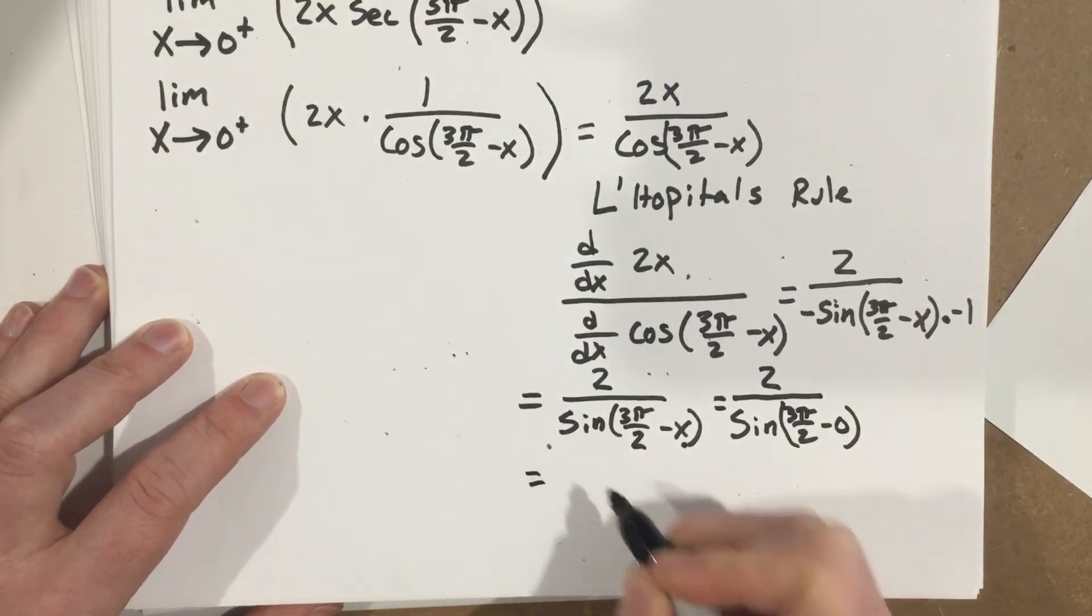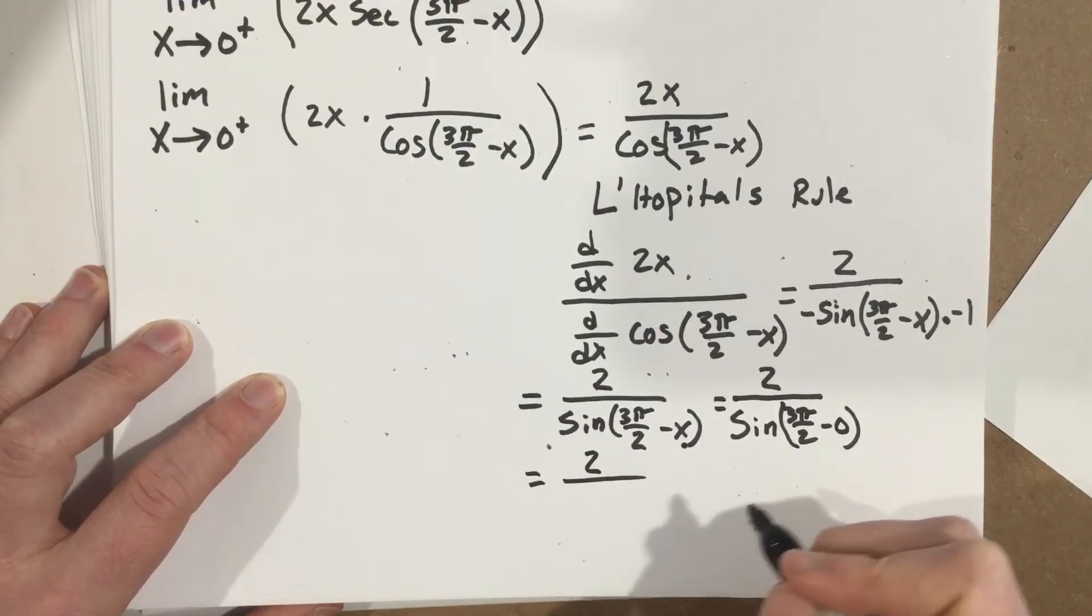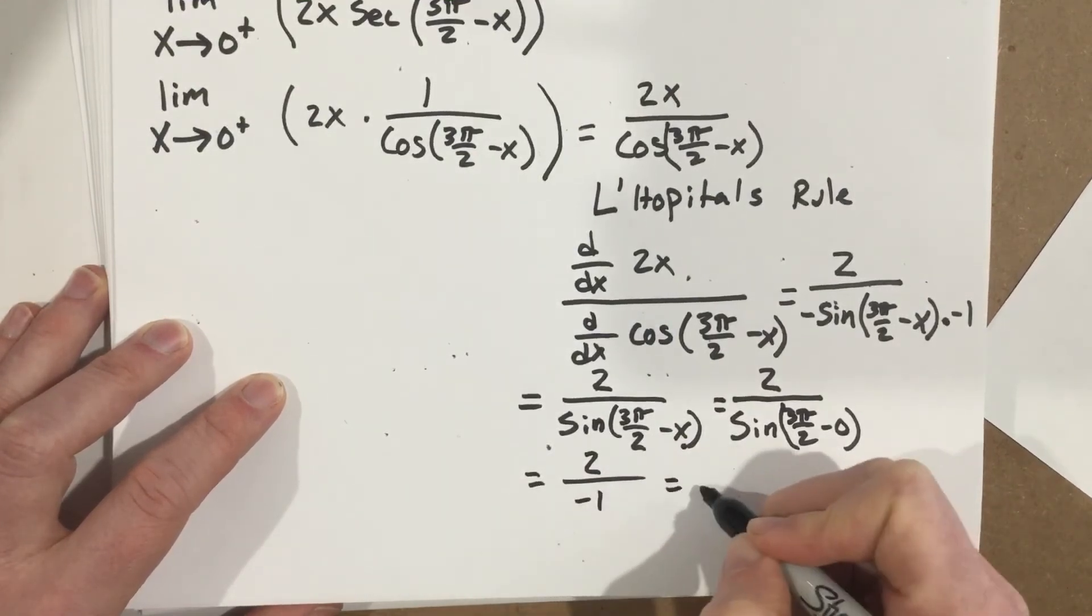Which is going to equal 2 over sine 3π over 2, which is negative 1. So I end up with negative 2.